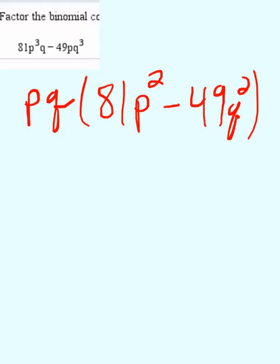Now that we've factored out that common factor pq, we're going to now look at what's left and see, can we factor that any further? We'll be at 81 p squared minus 49 q squared.